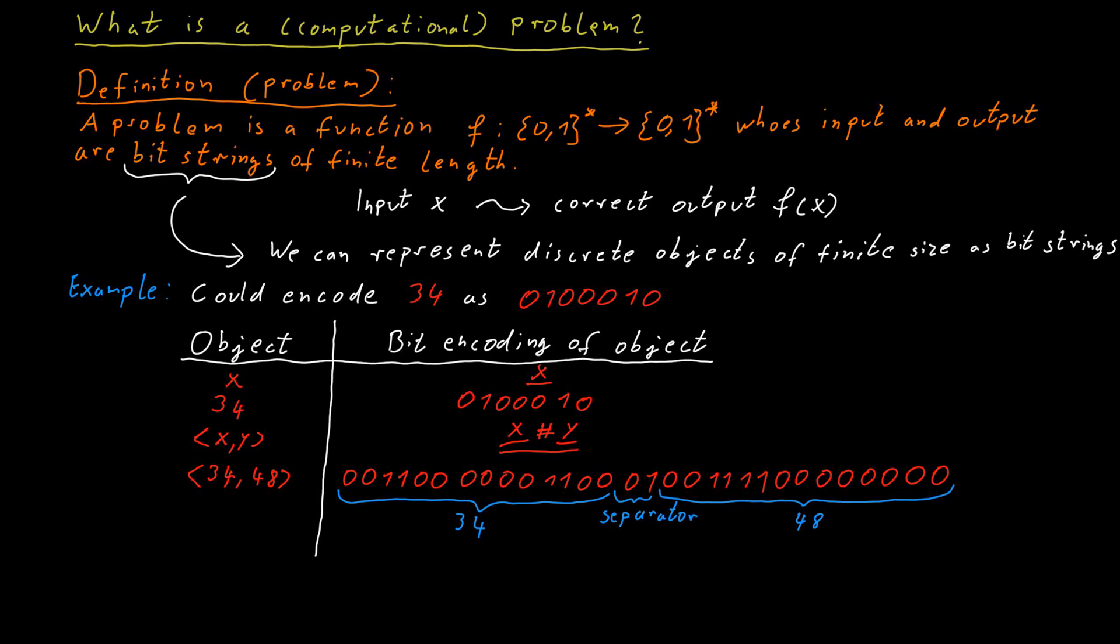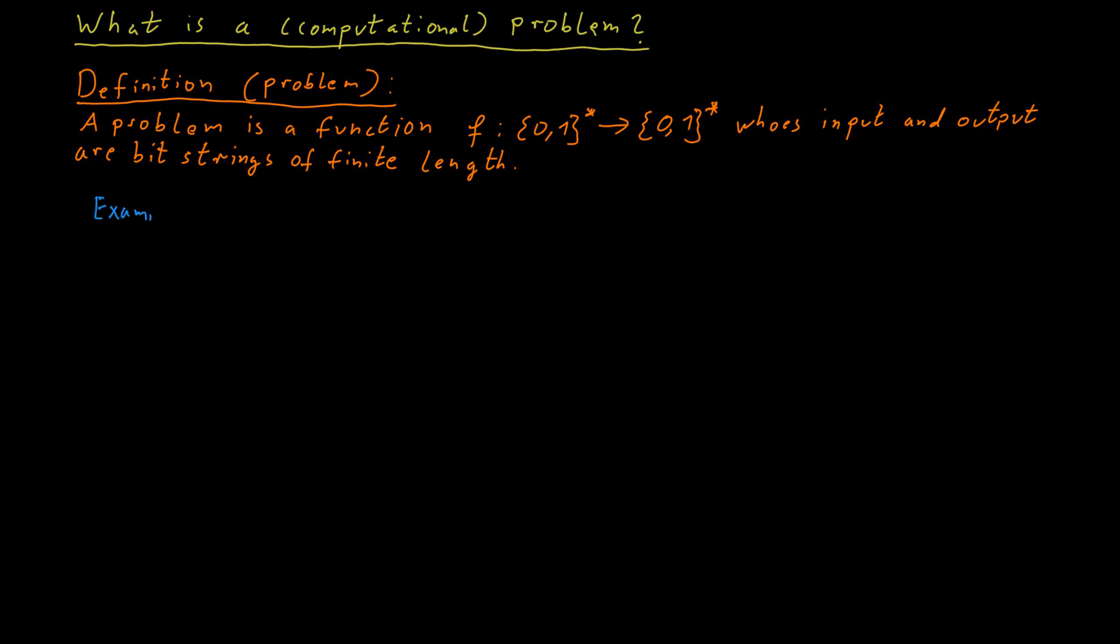Now an example for a problem would be that we want to add two integer numbers. So the input would be a pair x and y and then the output would be the bit encoding of the sum of x and y.